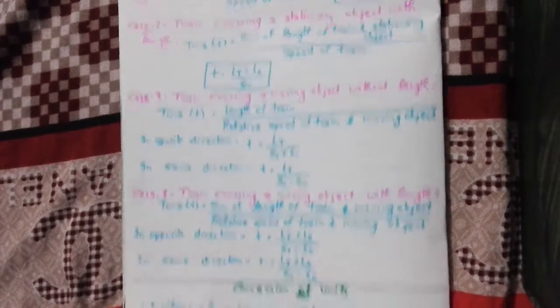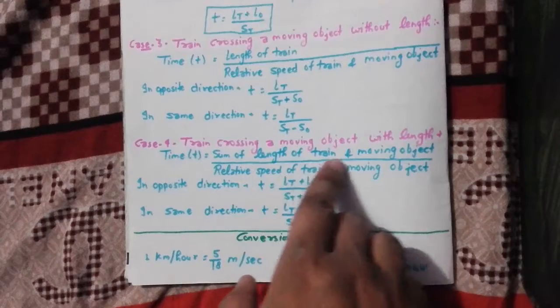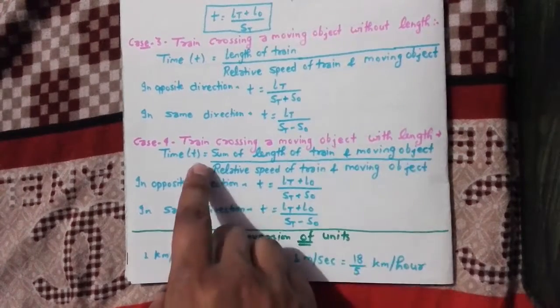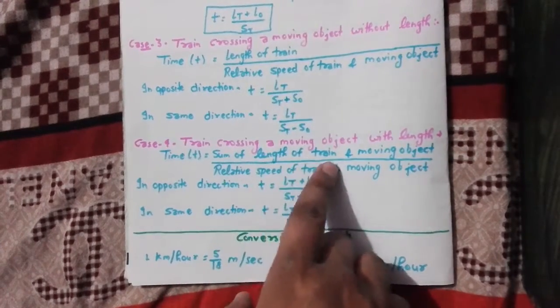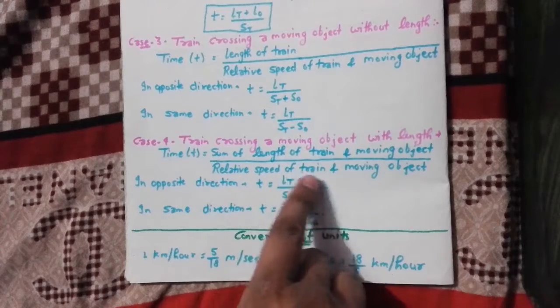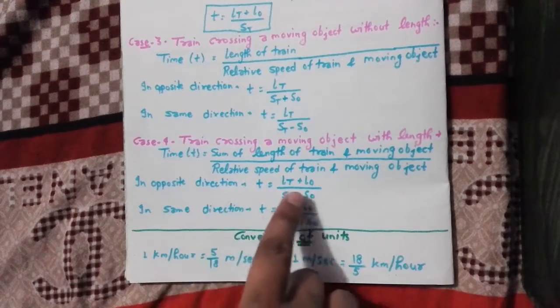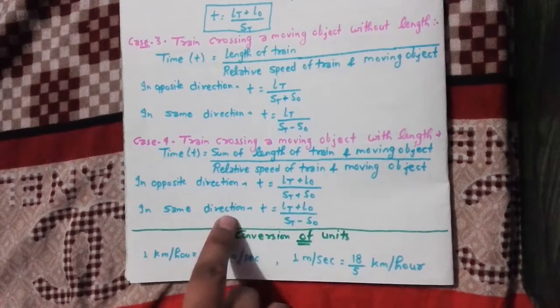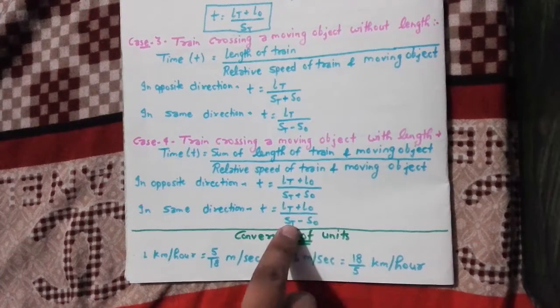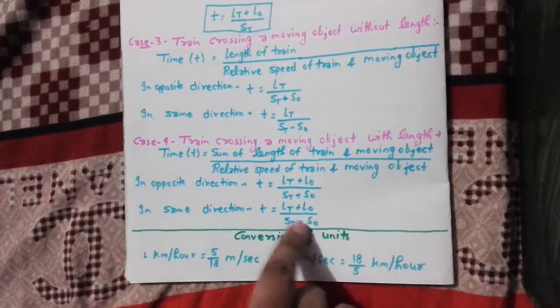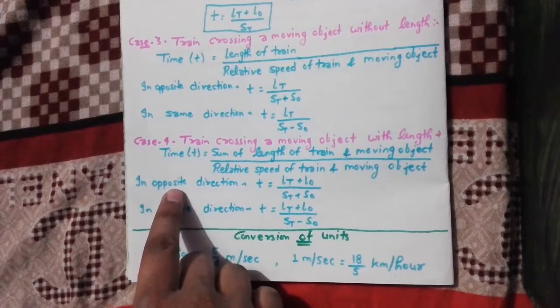Next is train crossing a moving object with length. So time equals sum of length of train and moving object upon relative speed of train and moving object. Opposite direction then it will be Lt plus Lo over St plus So. Same direction, in the same direction, then Lt plus Lo over St minus So. Same direction minus, opposite direction plus.